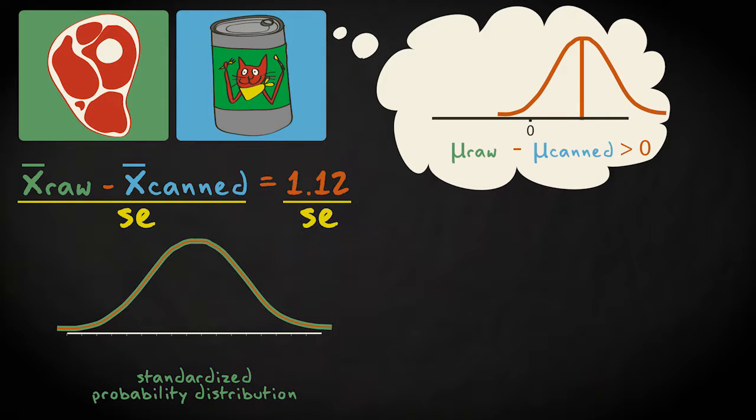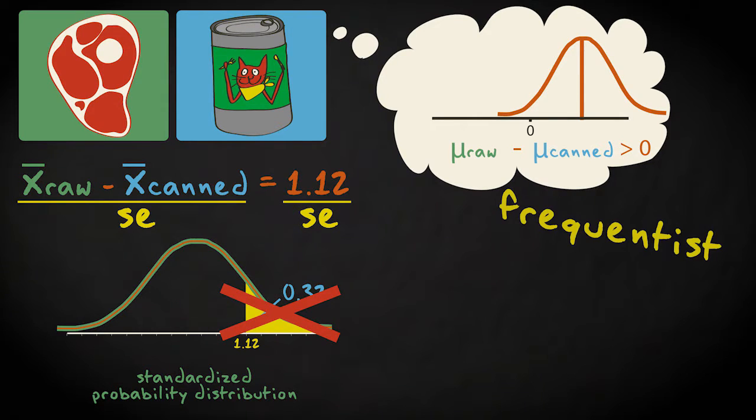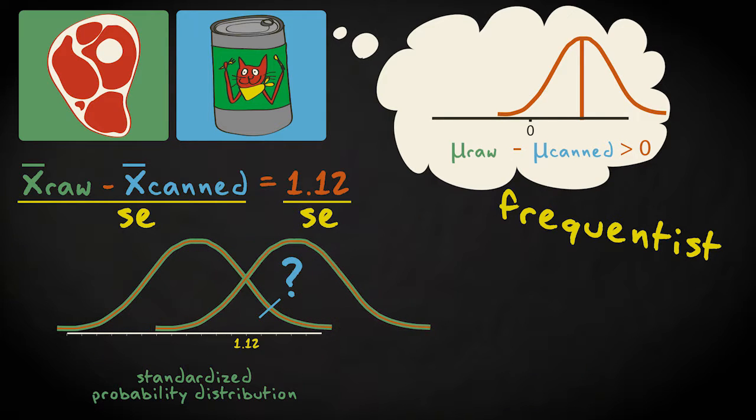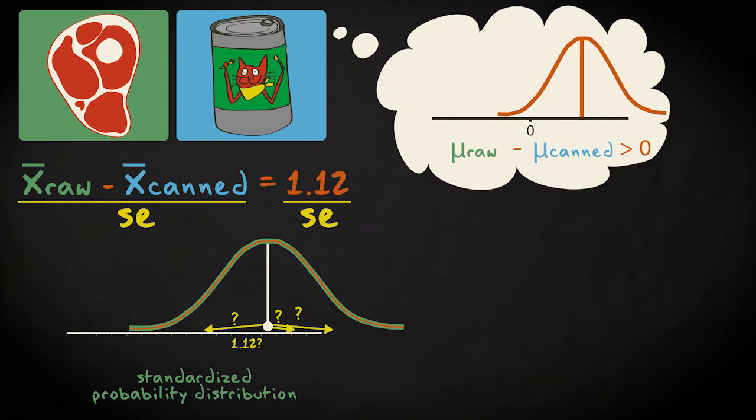It would be great if we could now say, for example, that based on the sample difference of 1.12, the probability that a true population difference favoring a raw diet exists is 0.32. Except it doesn't work that way, at least not using frequentist statistics. We simply can't calculate this probability because we don't know where the probability distribution lies. We know the shape and scale, but not the location, which is determined by the population mean.